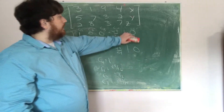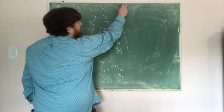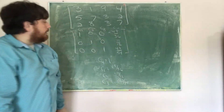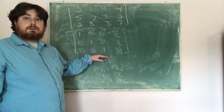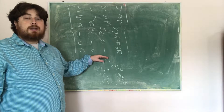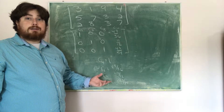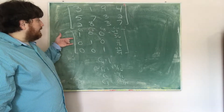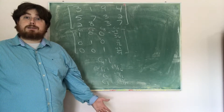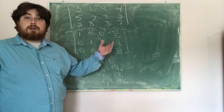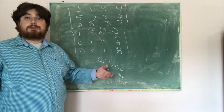To recap: the right-hand side doesn't matter for these determinations. Just row reduce the original matrix. If the number of leading ones equals the number of rows, it is a spanning set. If there are any free variables, it is linearly dependent; if there are none, it is linearly independent. In this case, we have a spanning set that is linearly dependent. Since it is not linearly independent, it is not a basis.